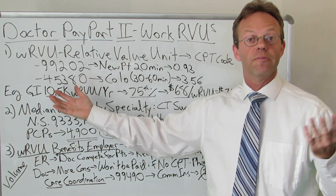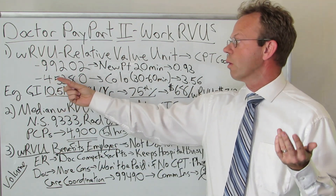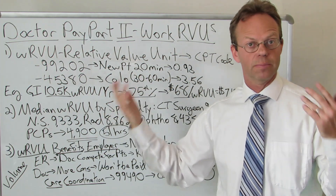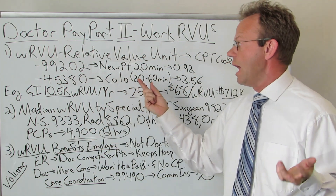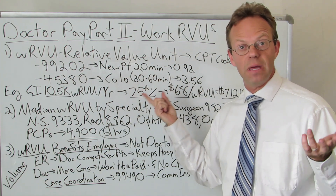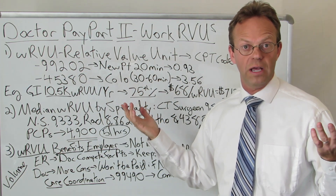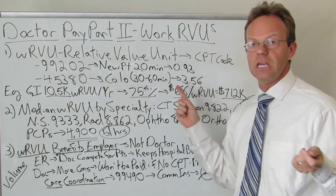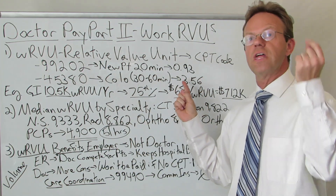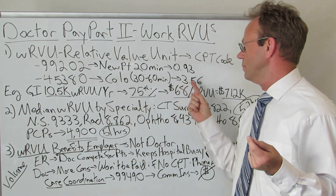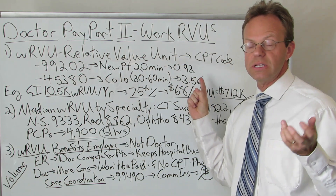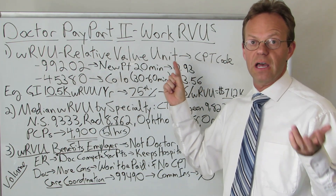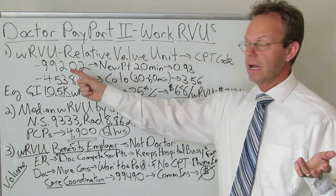Now let's use another example for an actual procedure. CPT code 45380 is for a colonoscopy with biopsy, typically performed by a gastroenterologist. That takes about 30 to 60 minutes to perform per the Mayo Clinic — I'll leave a link in the show notes. That gives an RVU of 3.56 for that one colonoscopy, which is about four times as many RVUs as the E&M code 99202.